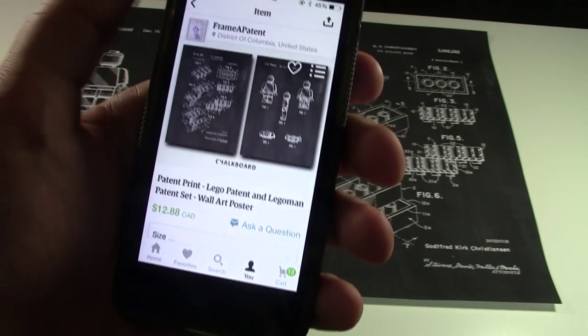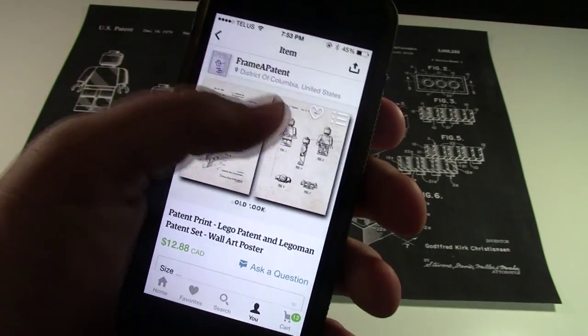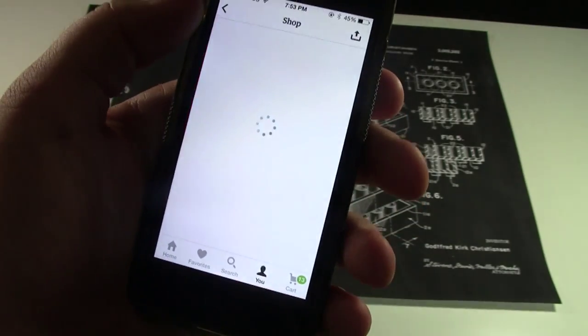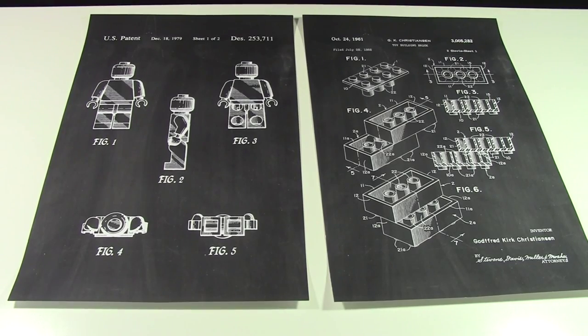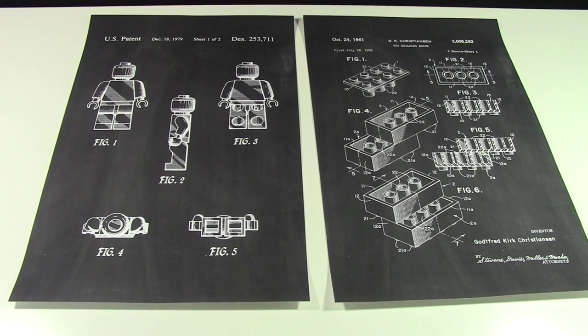These patents are from Etsy from a store called Frame A Patent. As you can see, this is the LEGO patent and you can get them in multiple different colors, but they also have many different non-LEGO patents for sale. The two colors of the patents I'm reviewing today are the chalkboard colors.